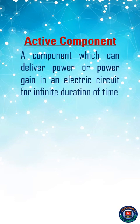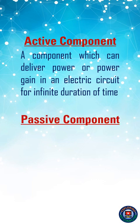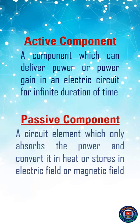Active Component: a component which can deliver power or power gain in an electric circuit for infinite duration of time. Passive Component: a circuit element which only absorbs the power and converts it into heat, or stores it in an electric field or magnetic field.